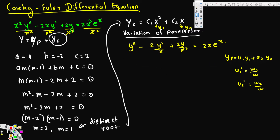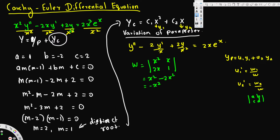To find W, we create a 2×2 matrix with y₁ = x² and y₂ = x on top, and their derivatives y₁′ = 2x and y₂′ = 1 on the bottom. The determinant is x²·1 − x·2x = x² − 2x² = −x². So W = −x².